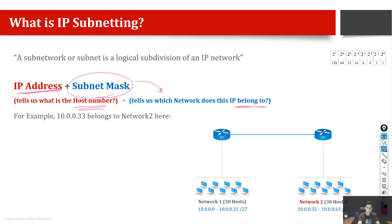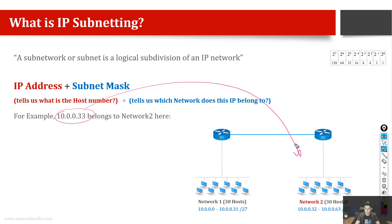For example, with some experience I can see that the computer 10.0.0.33 belongs to the second network. I can see from the range that this network starts from dot 1 and the last one has dot 31 — dot 0 is the network number, but that's a separate topic. Similarly, I can see that this network starts from 32 up to 63, so 33 definitely belongs to this second network.